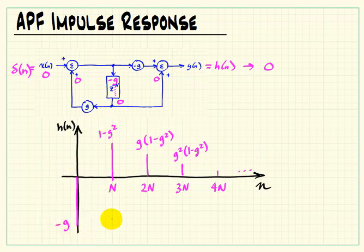So we have this large negative going impulse at the beginning, and then a series of positive decaying impulses after that.